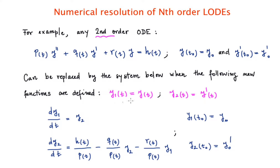The first new function, which we call y1, is going to be the y function itself. The second one, which we call y2, is going to be the time derivative of the y function. Since y and its time derivative are two different functions, they are named differently. The first equation of the system is quite straightforward: the time derivative of y1 is just y prime, which is actually y2. The initial condition for y1, since it equals y, is simply y0.